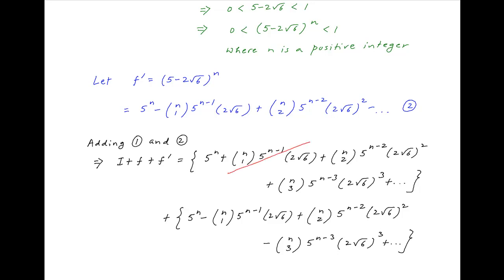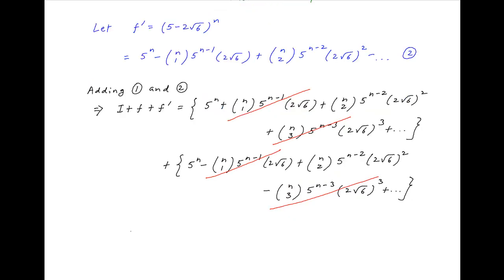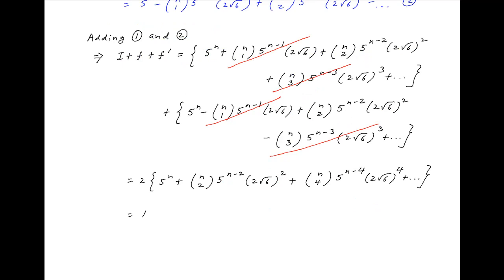Notice that on the right-hand side, the odd-numbered terms in both expressions cancel out. We are left with 2·[5^n + C(n,2)·5^(n-2)·(2√6)² + ...]. The expression in the brackets is an integer, and therefore i + f + f' is equal to 2 times an integer, which means it is an even number.